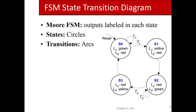If we have 20 cents and put in a nickel we get to 25 and release the soda. A dime gets us to 30 where RS=1 and RN=1, then back to idle. A quarter gets us to 45 where we release the soda and release a dime of change, then transfer to a credit-10 state where we release another dime, and then go back to idle.